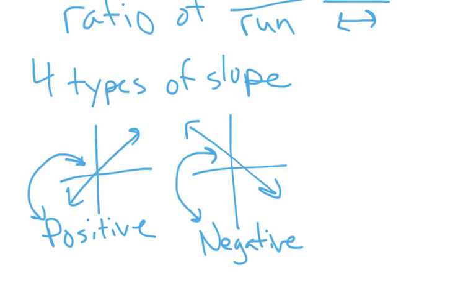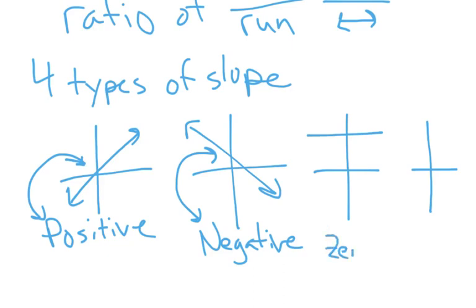Then we have two other types of slope. One of them is zero. And then we have what is called undefined, which we often abbreviate as UND — that's where it's a straight up vertical line.